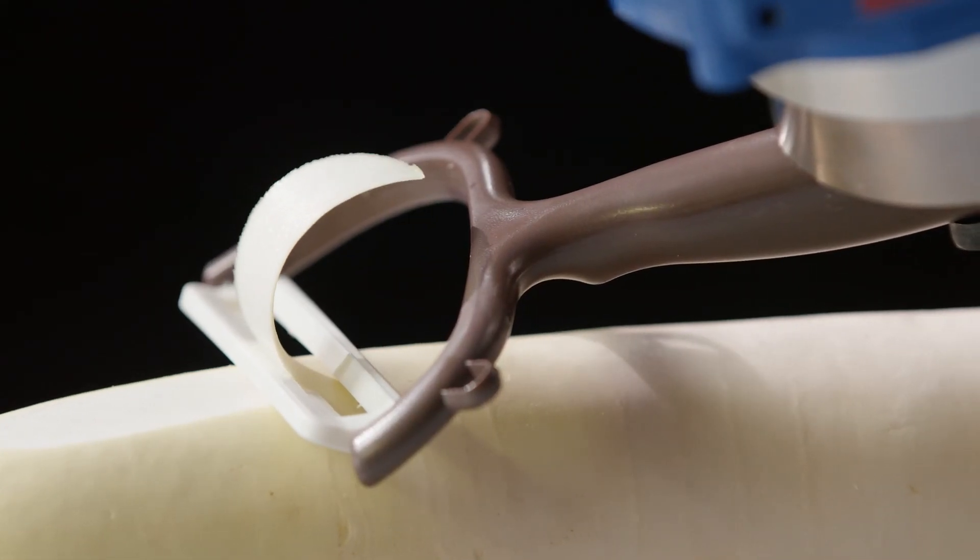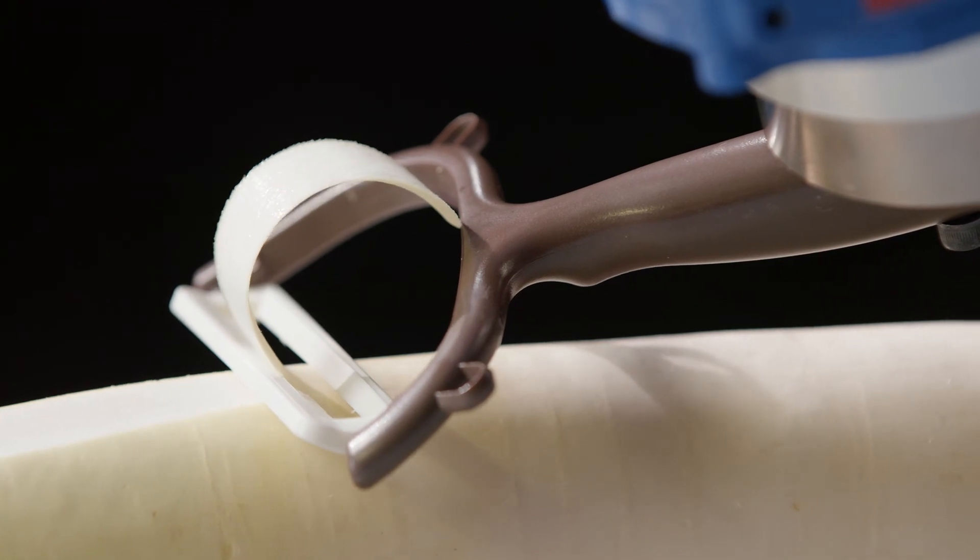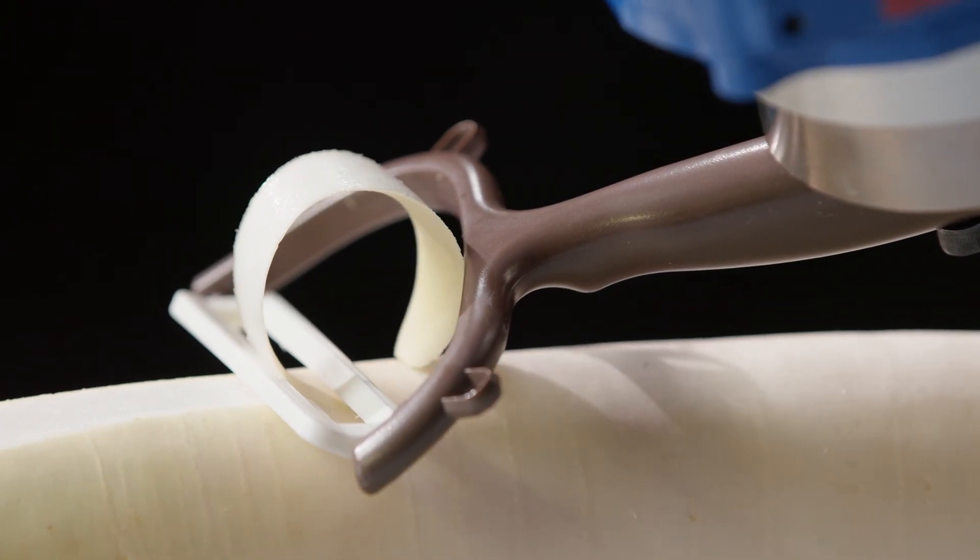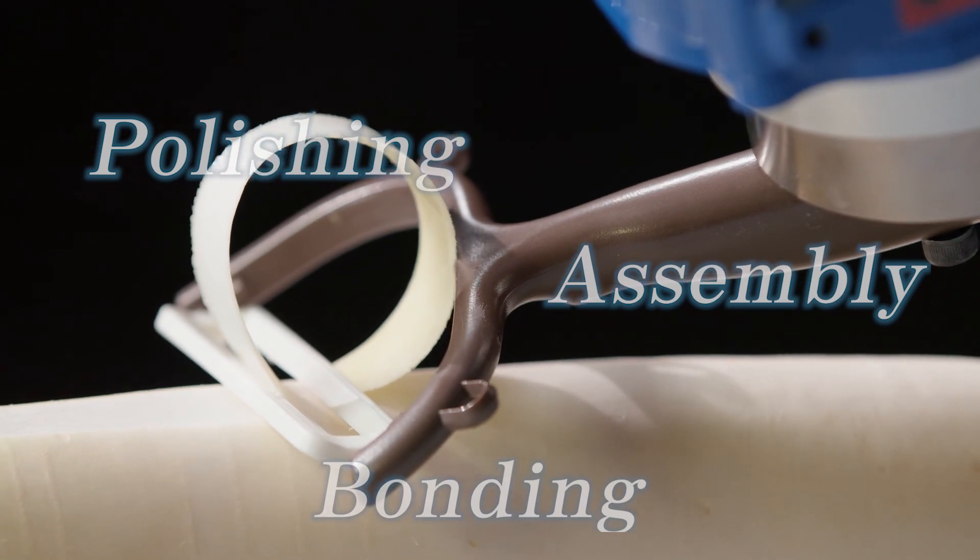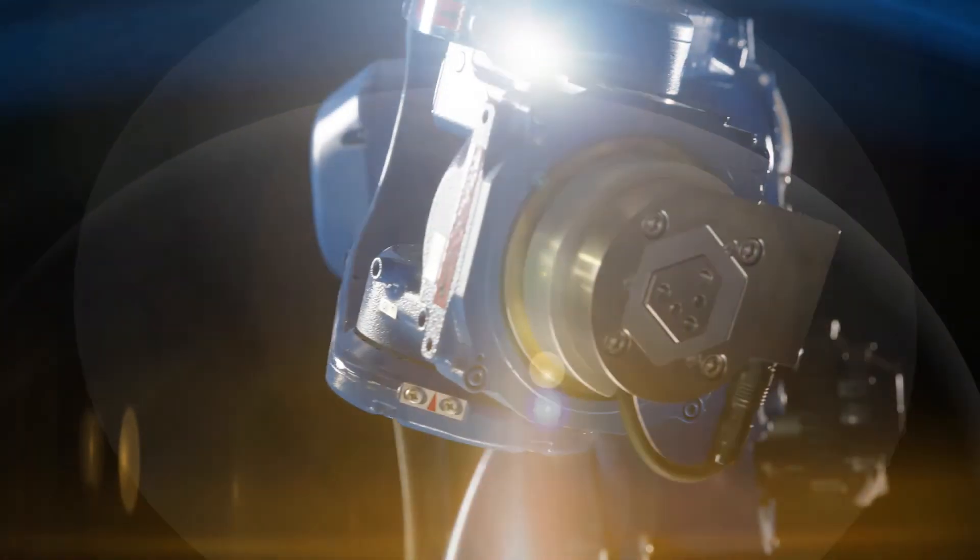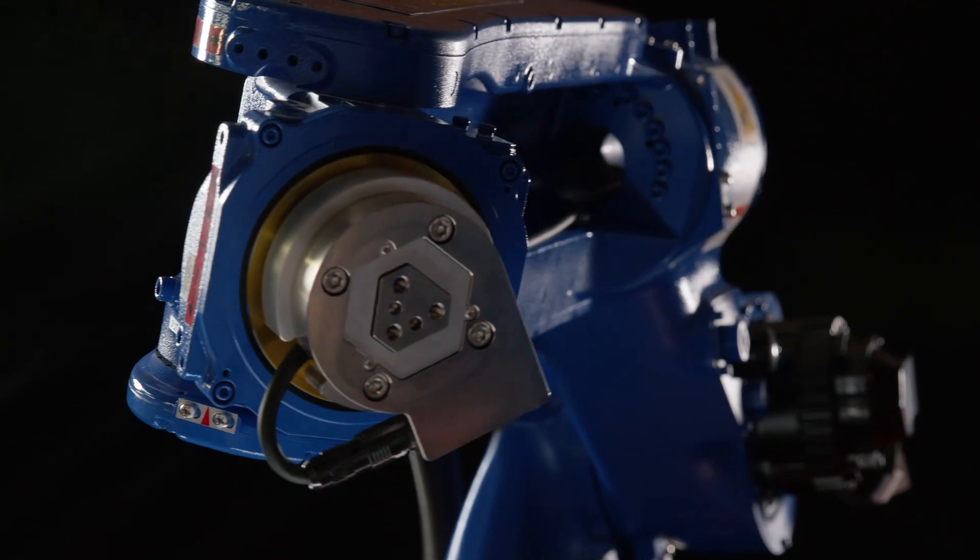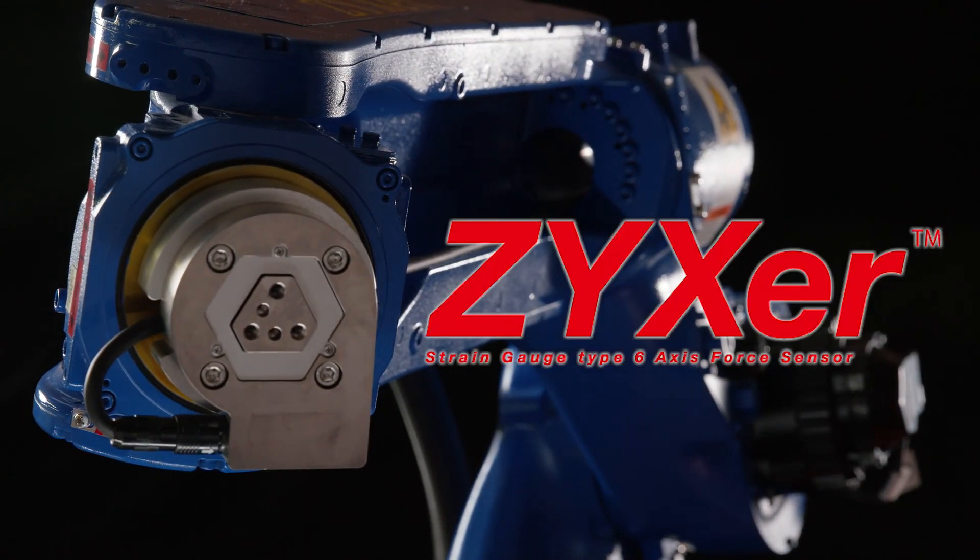The ability to achieve this kind of fine control makes it ideal for a variety of applications, such as polishing, assembly, and bonding. A robot integrated with Zixxer can achieve the touch and motions of a skilled worker.